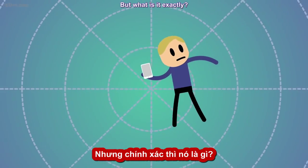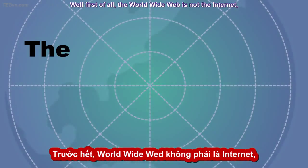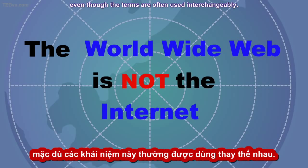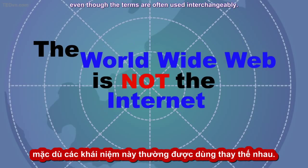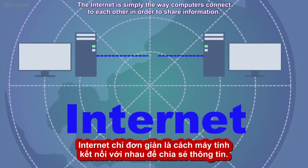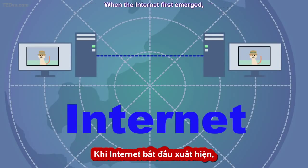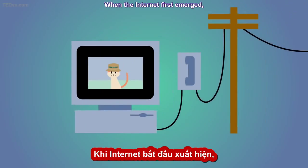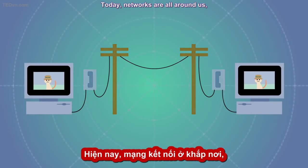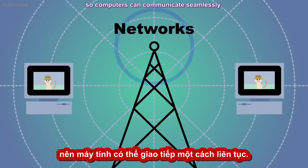But what is it exactly? Well, first of all, the World Wide Web is not the Internet, even though the terms are often used interchangeably. The Internet is simply the way computers connect to each other in order to share information. When the Internet first emerged, computers actually made direct calls to each other. Today, networks are all around us, so computers can communicate seamlessly.